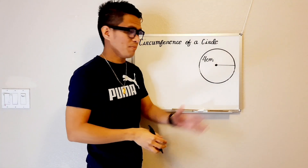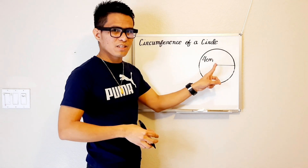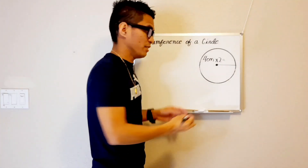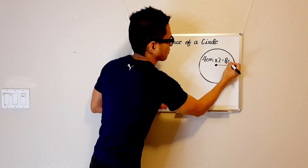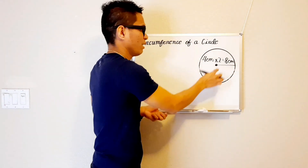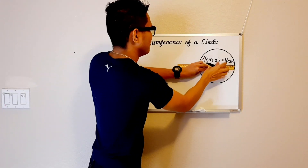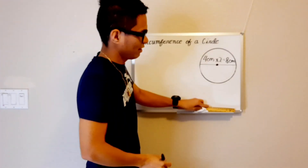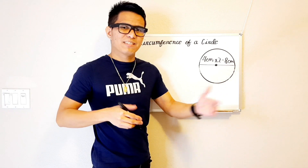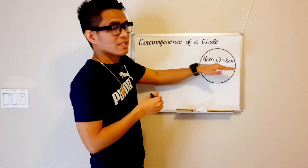To find the circumference of this circle, we're just gonna find the diameter first. So we're gonna multiply this 4 cm by 2. So 4 cm times 2 is 8 cm. Since we multiply this by 2, we're gonna double this line. So I'm gonna make a line from here to here. And that's what we call diameter. When we say diameter, it means how wide our circle is, or it means a straight line that passes through the center of the circle.